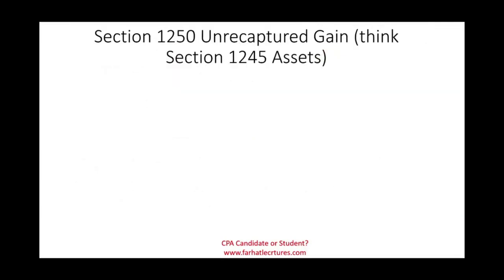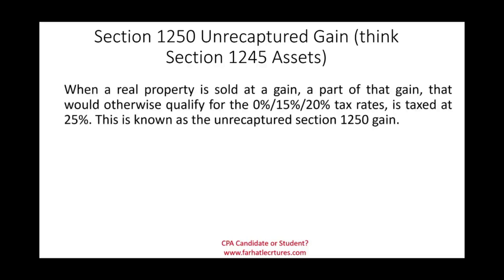What we are discussing is Section 1250 unrecaptured gain. When a real property is sold at a gain, the part of that gain that would otherwise qualify for 0%, 15%, and 20% capital gains rates is instead subject to 25%. The IRS wants to charge you 25%, and this is known as unrecaptured Section 1250 gain.